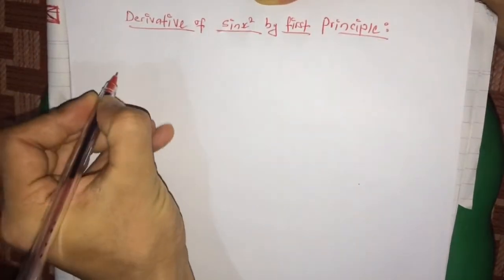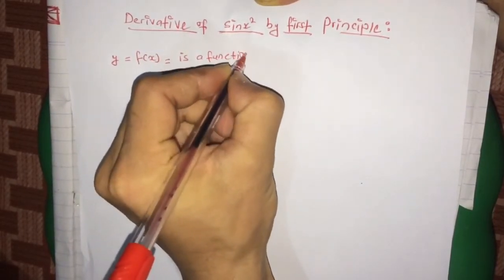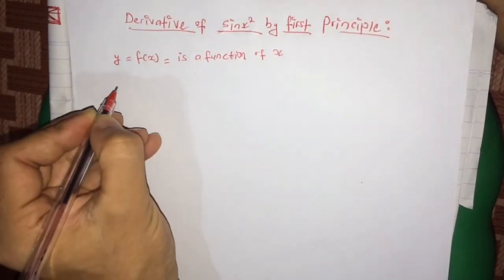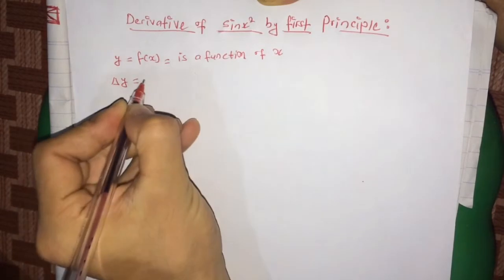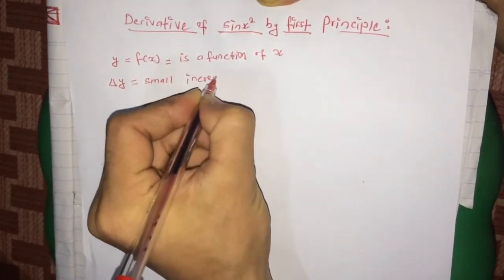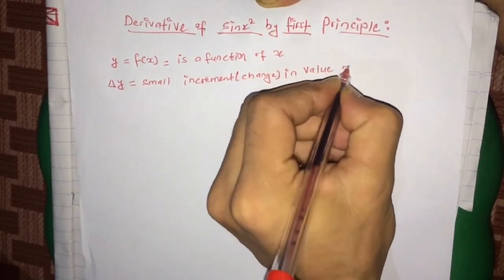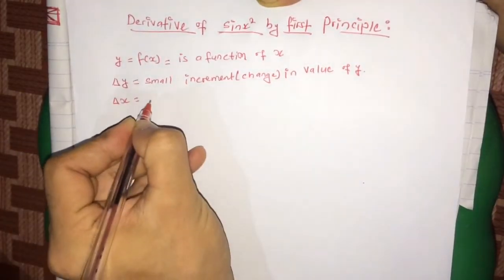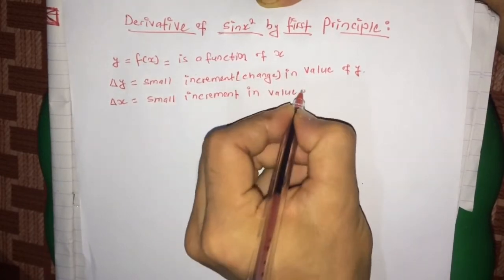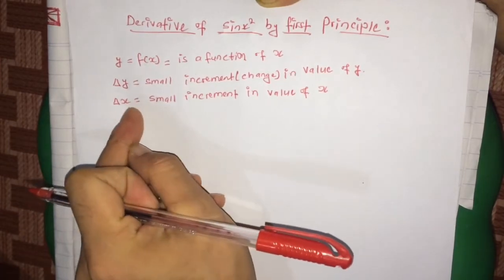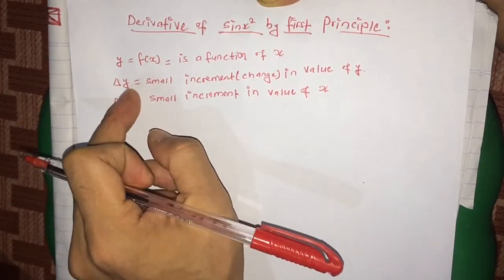Suppose y = f(x) is a function of variable x. Also suppose that Δy is a small increment or change in the value of y. Similarly, Δx is a small increment or change in the value of x. This means that since y is a function of x, a small change in the value of x causes a change in the value of y. So Δy is the change in value of y due to the change in value of x.